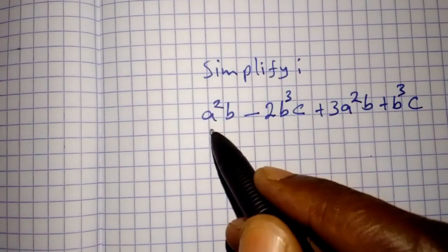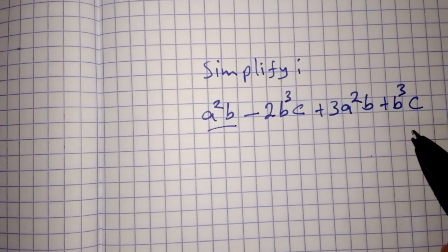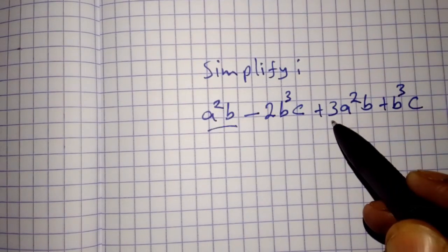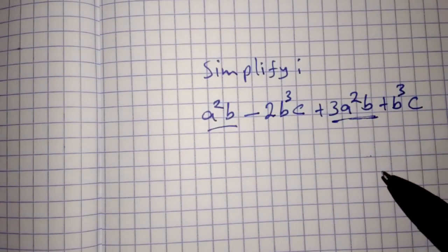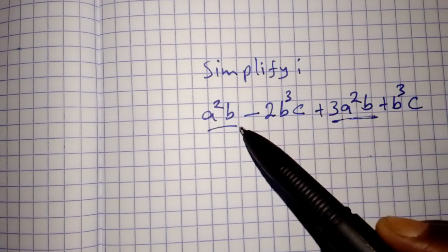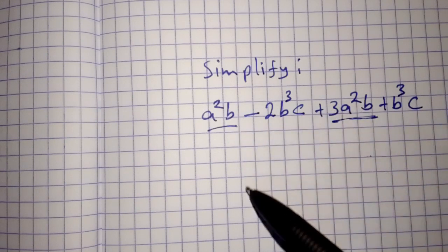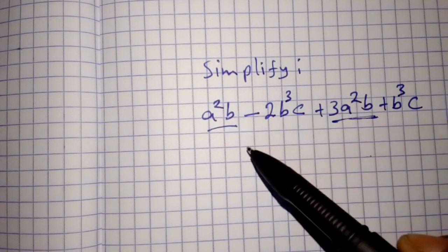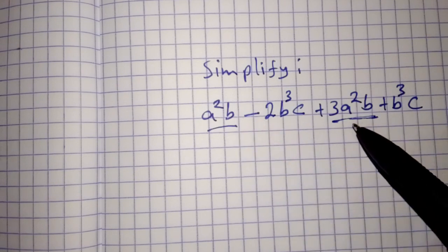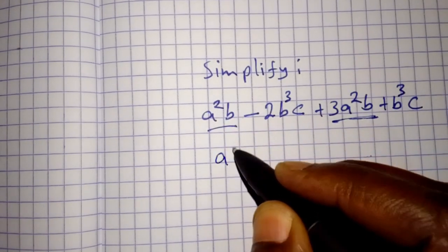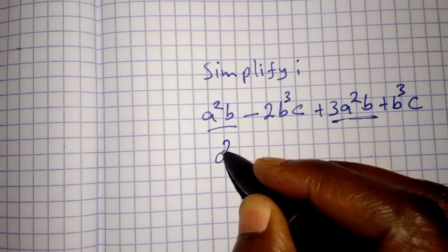So this is a²b and this is 3a²b. These are the like terms for a. The like terms for a is a²b.